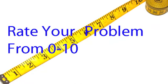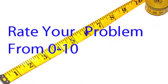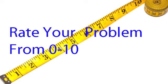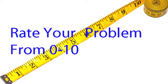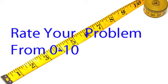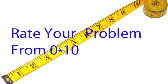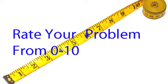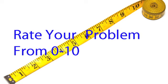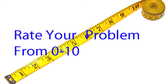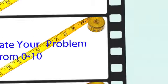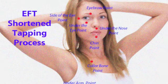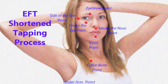Now you need to set up a feedback mechanism so that you can assess the results you're achieving when you use EFT. To do this, simply ask yourself on a scale from 0 to 10 — where 10 is the worst this has ever been — where am I now? You're now ready to begin to tap on the problem.